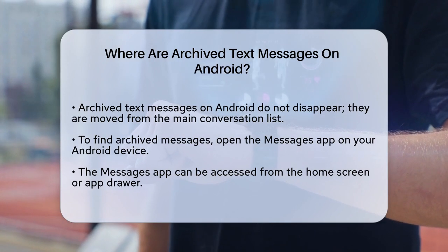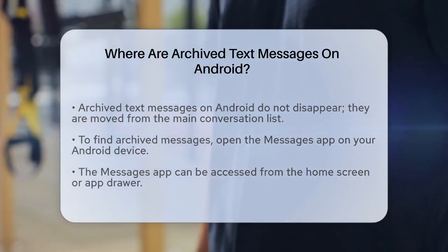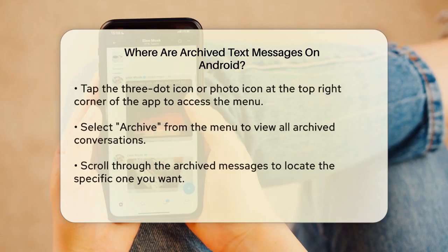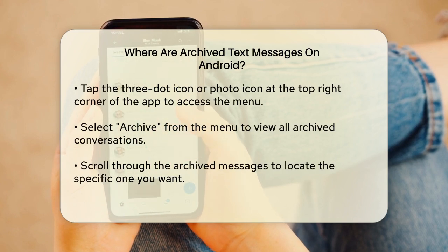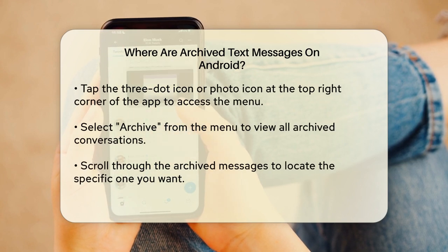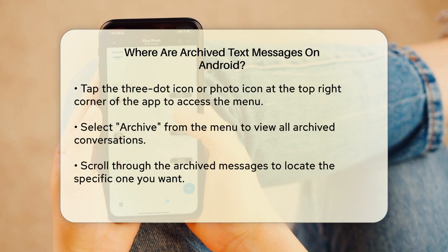First, open the Messages app on your phone. You can find it on your home screen or in your app drawer. Once you're in the app, click on the three-dot icon or the photo icon at the top right corner, depending on your device and app version. From the menu that appears, select Archive.